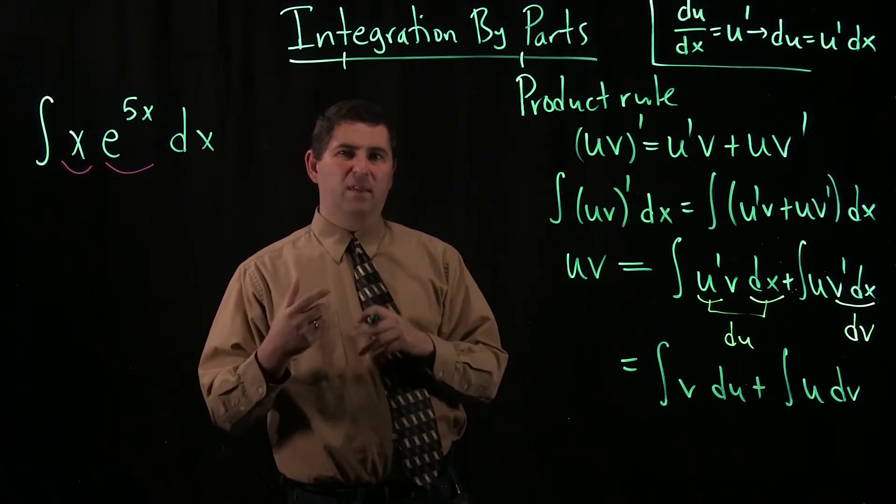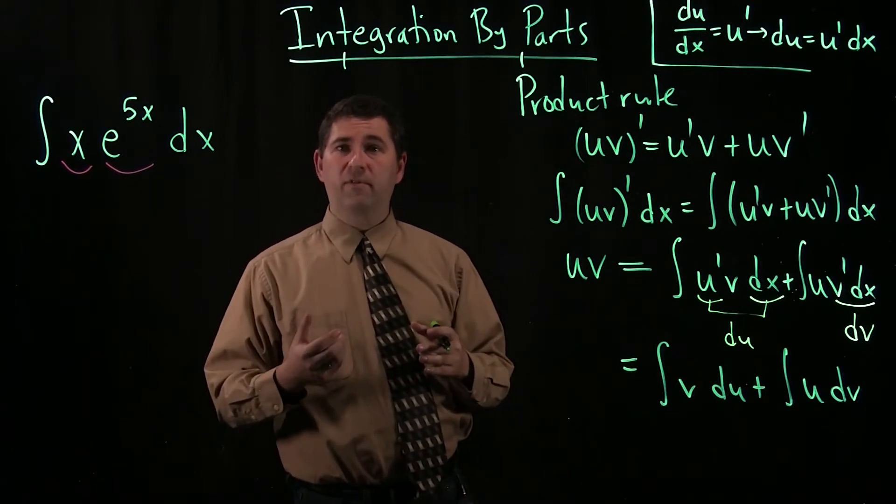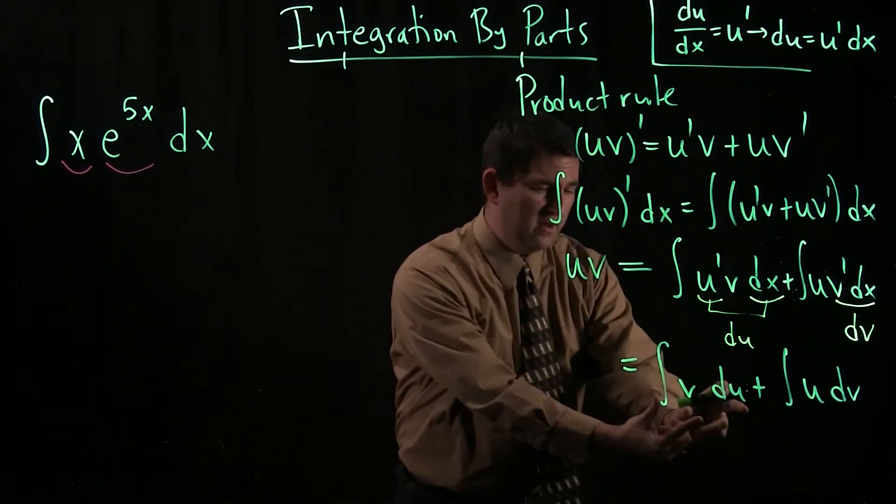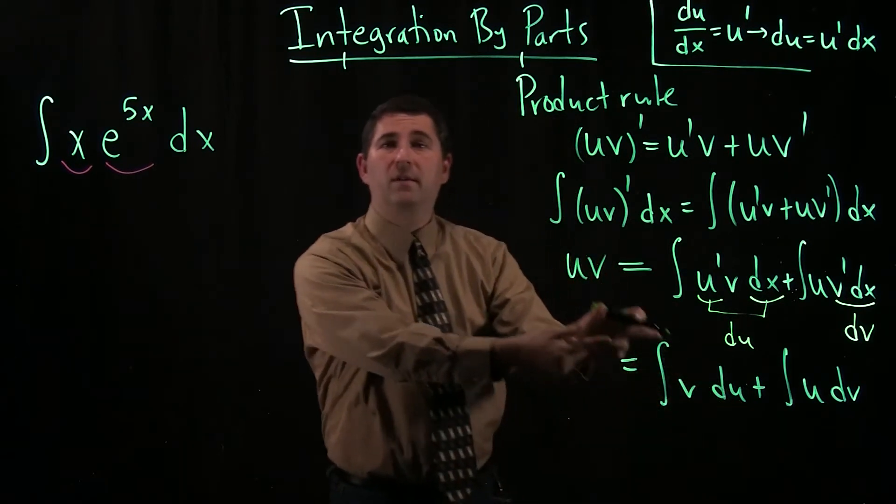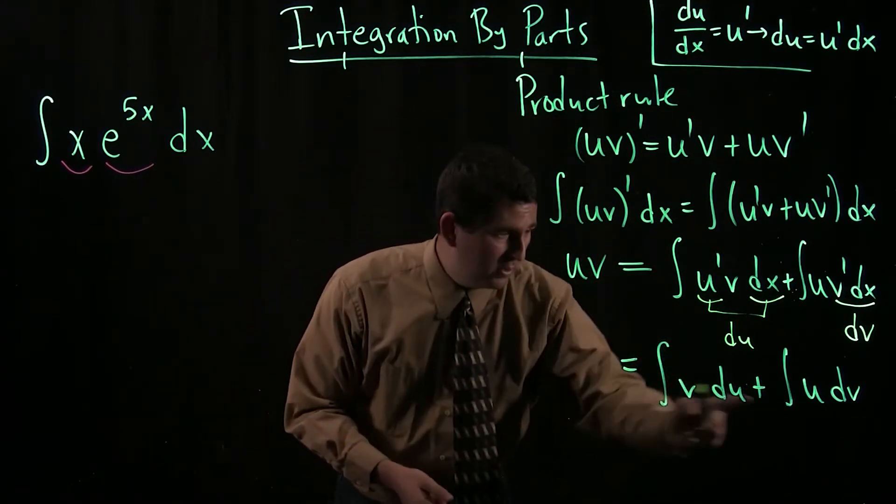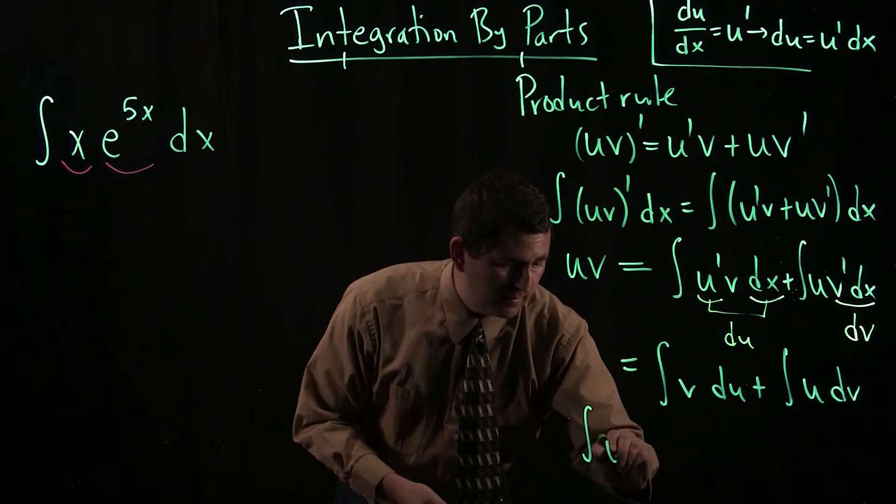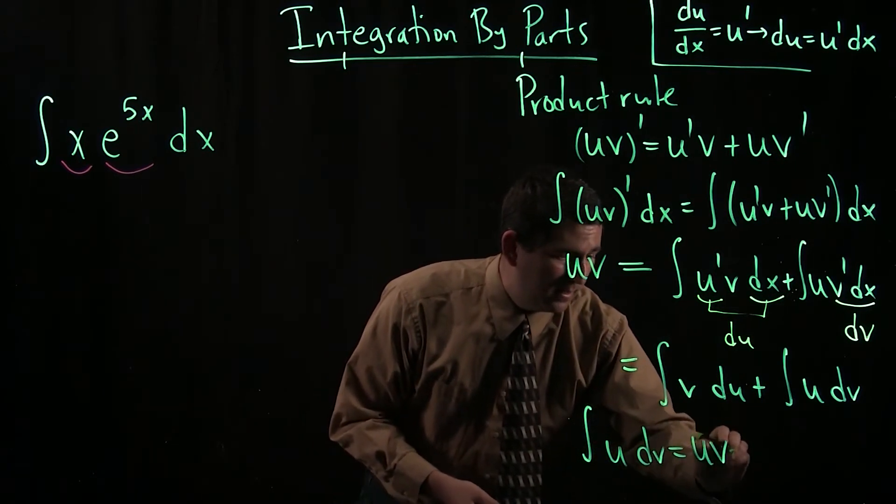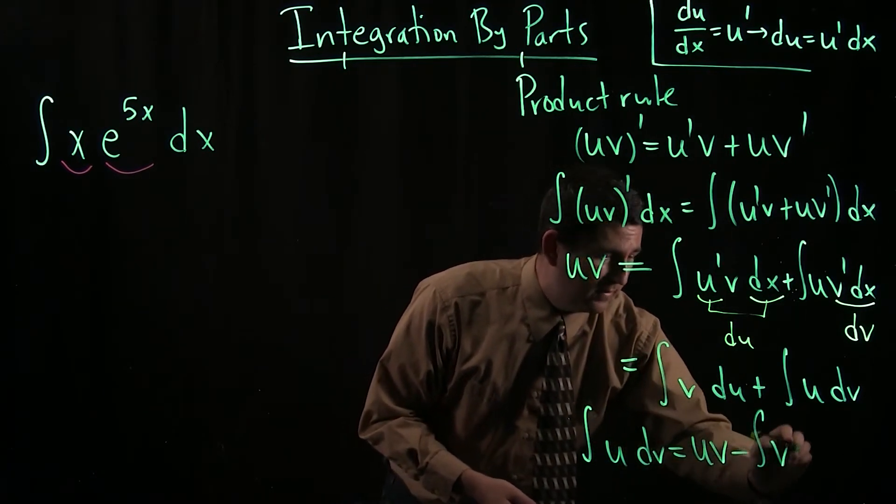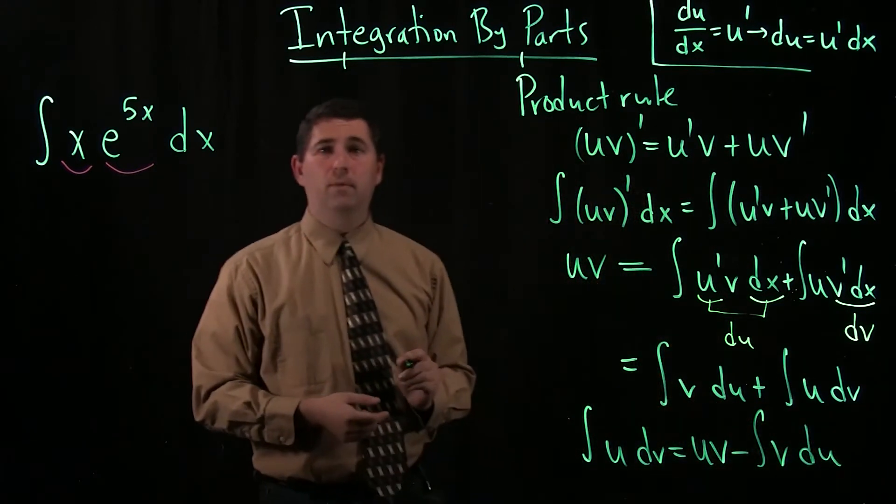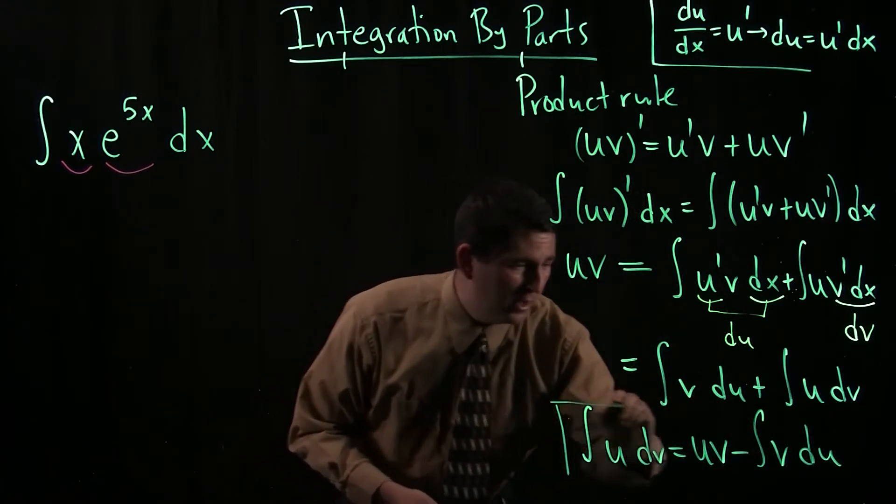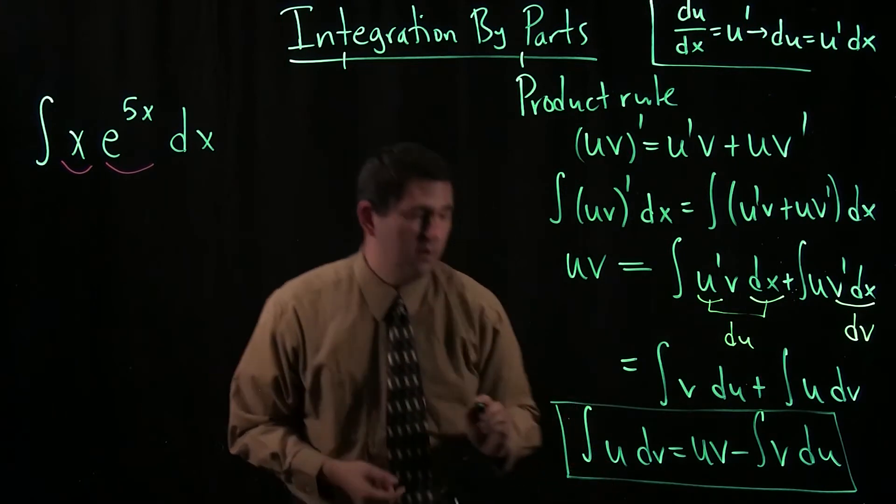So I could rewrite this if I liked as an antiderivative of v du plus an antiderivative of u dv. And the last step to making this into what we call the integration by parts formula is to take this antiderivative of v du and subtract it to the left. Once we do that, we have that the antiderivative of u dv is u v minus an antiderivative of v du. And this is our so-called integration by parts formula.